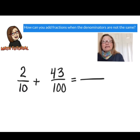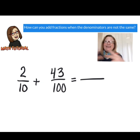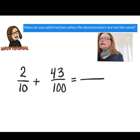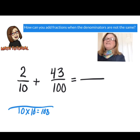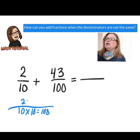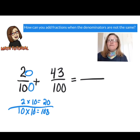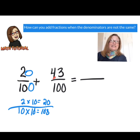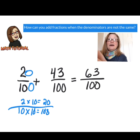Let's take a look at this practice problem. We have two tenths and we're adding it to 43 hundredths. We know that we cannot add when we have unlike denominators unless we make them equivalent fractions. So let's take two tenths — I know 10 times 10 equals 100. I do the multiplication to the denominator and also to the numerator, so two times 10 gives me 20. I know that 20 hundredths is an equivalent fraction to two tenths. Now I can add: 20 hundredths plus 43 hundredths gives me 63 hundredths.